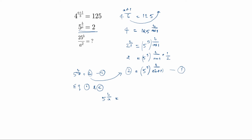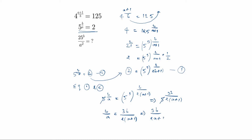So we write: 5 power 3b by a equals 5 cube power b by 2 bracket of a plus 1. Comparing the exponents: 3b by a is equal to 3b by 2 bracket of a plus 1, which expands to 3b by 2a plus 2. Now cross-multiply.